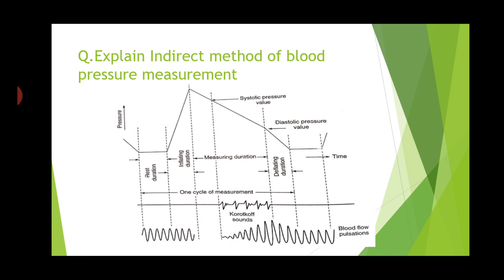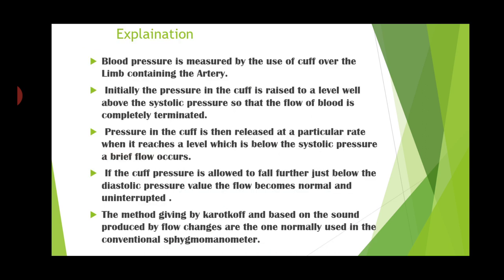When we decrease the cuff pressure with the valve, whenever the cuff pressure falls just below the systolic pressure, Korotkoff sound is heard and we get normal flow. Again, whenever the pressure falls just below the diastolic pressure, the Korotkoff sound disappears or changes. At that point we get the normal flow of blood.